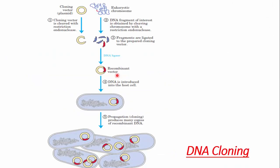In DNA cloning, we first cut our vector with a restriction enzyme. Using the same restriction enzyme, we cut our eukaryotic chromosome at the desired gene of interest. Then with the help of DNA ligase, we join these two fragments and transfer the construct into eukaryotic cells. We then propagate those clones inside the host cell, producing thousands of copies of recombinant DNA.